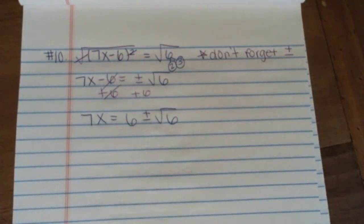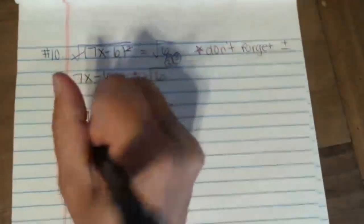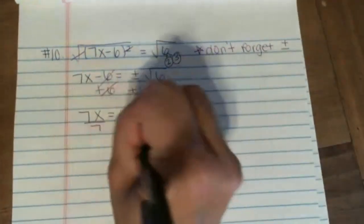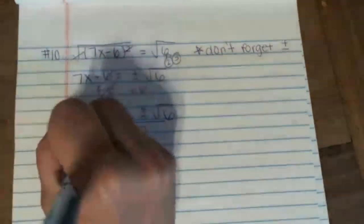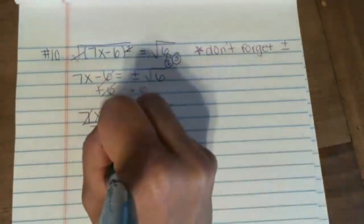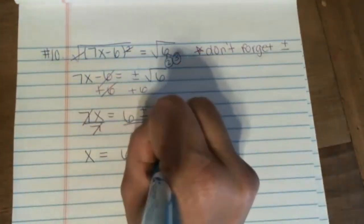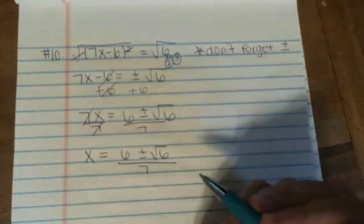Last but not least, it's 7 times x, so we're going to move that 7 to the other side. We're going to divide both sides by 7. Notice everything on the right-hand side will be divided by 7, so we're left over with x equals 6 plus or minus the square root of 6 all over 7.